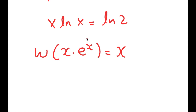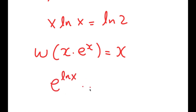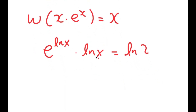To do that, I'm going to rewrite x as e to the power of ln x, because e to the power of ln x is equal to x — the ln and e cancel out. And now, x in this case is ln of x, so I have ln of x times e to the power of ln x.